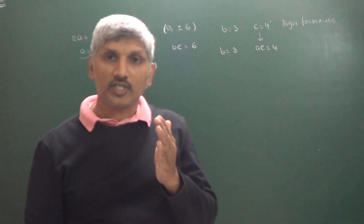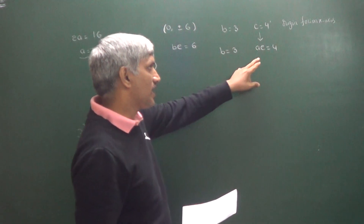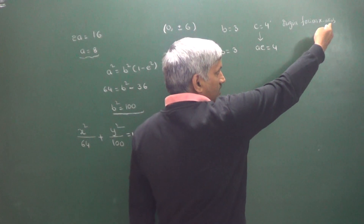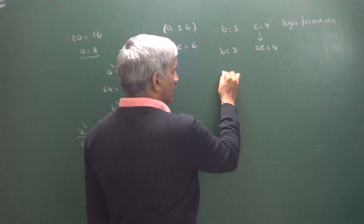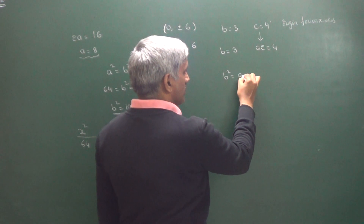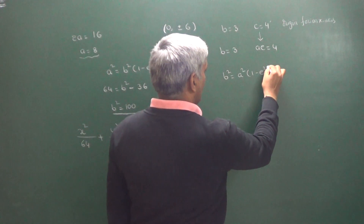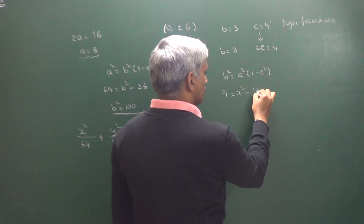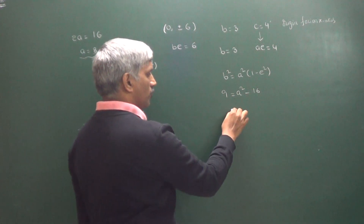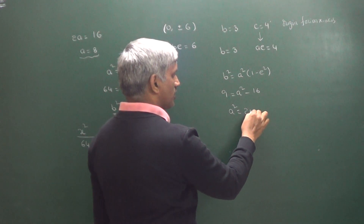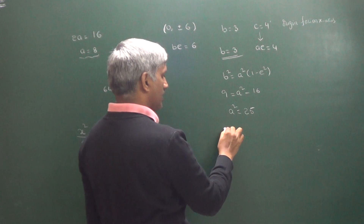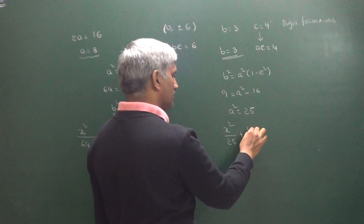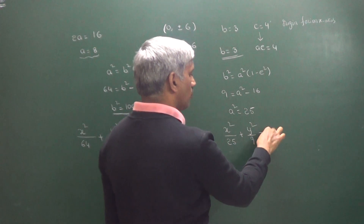When focus is on the x-axis, the condition is B² = A²(1 − E²). So 9 = A² − A²E², giving A² = 25 and B² = 9. Therefore the required ellipse equation is x²/25 + y²/9 = 1.